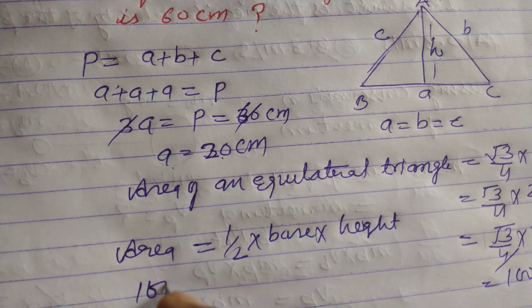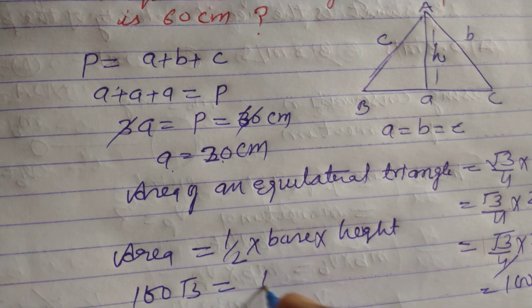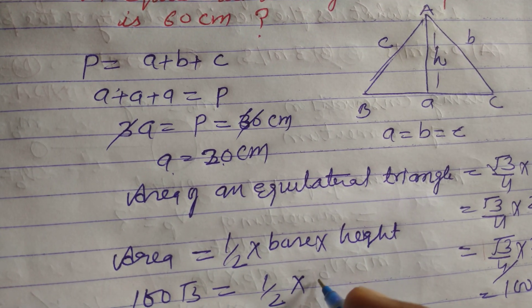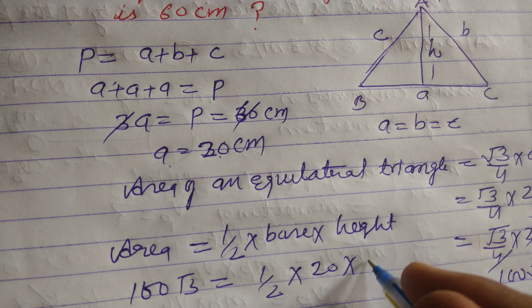So area is 100 square root 3, half base is 20, and height is h.